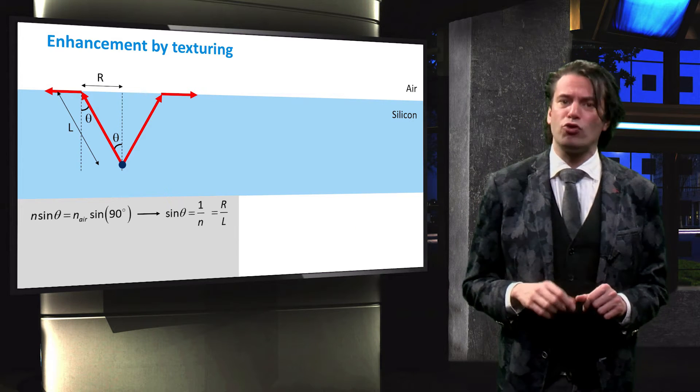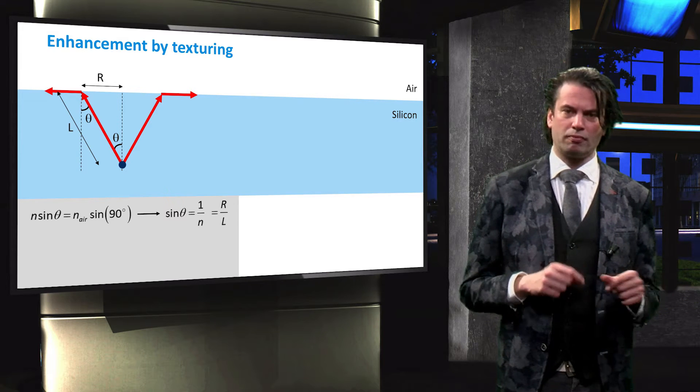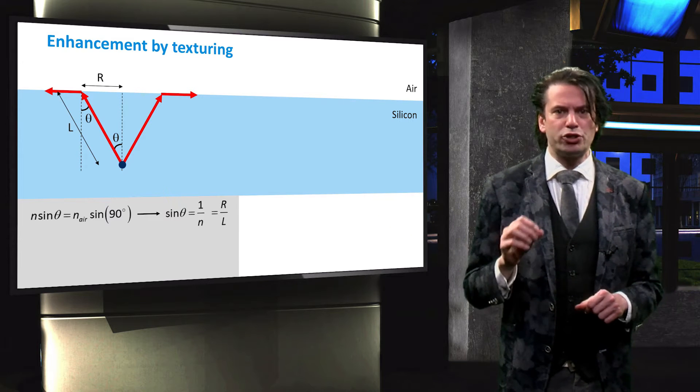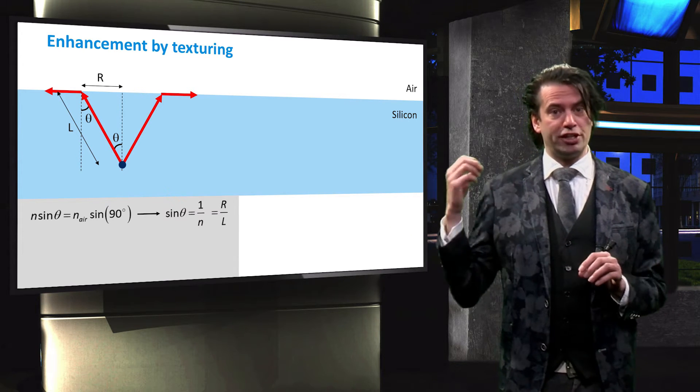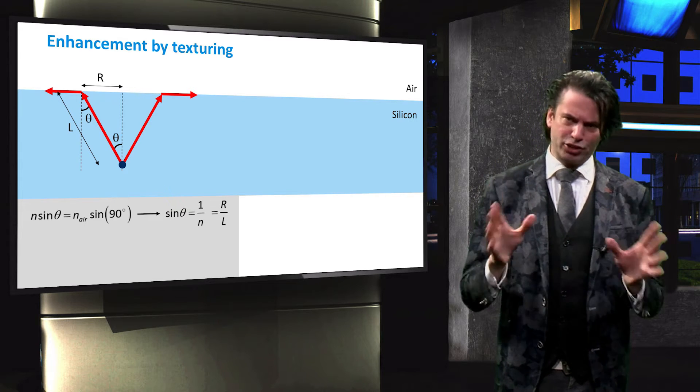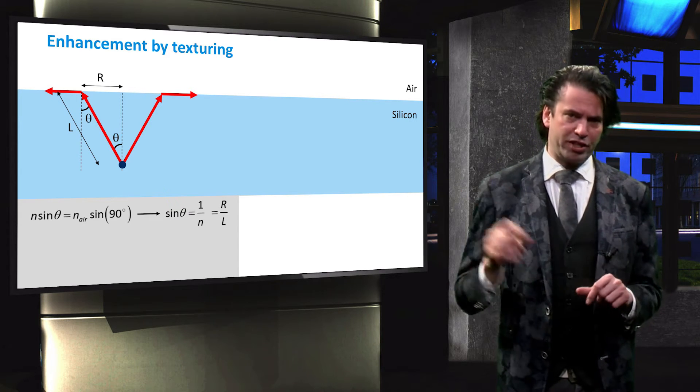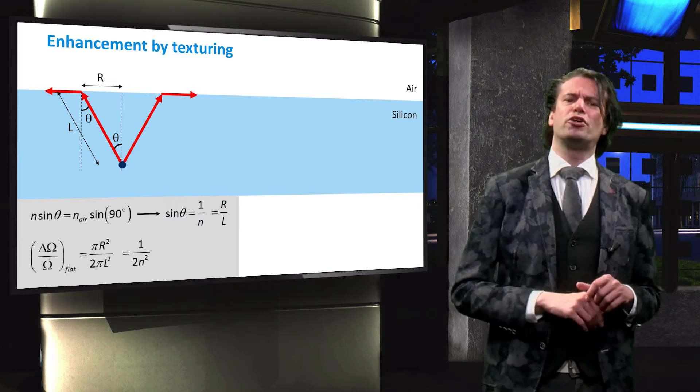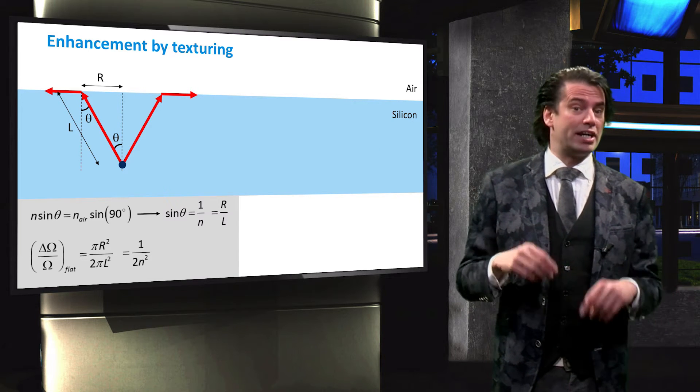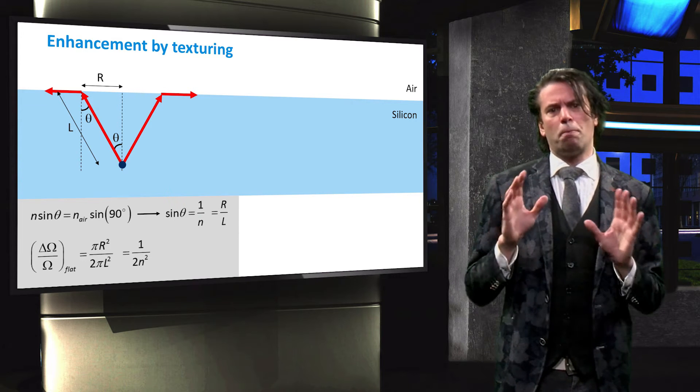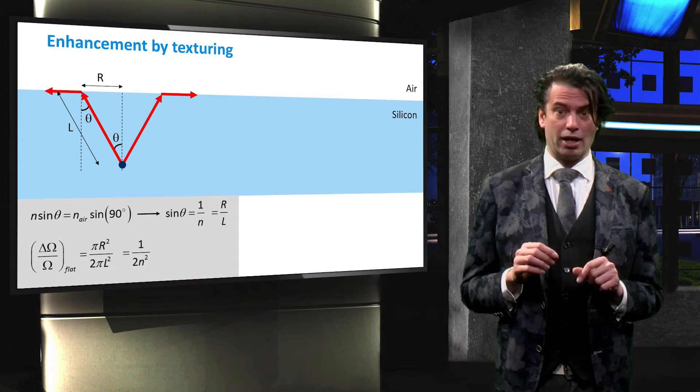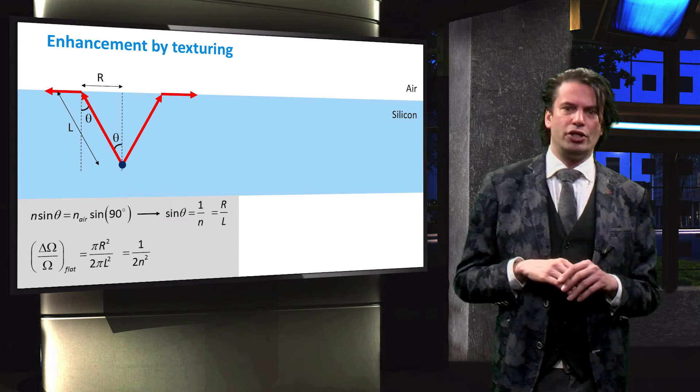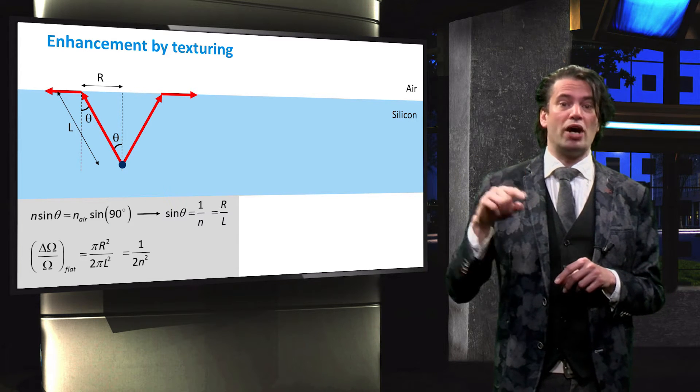We can now define the amount of light trapping in the solar cell. This is achieved by calculating the solid angle under which the light can reach a point in the bulk, called the cone of incidence. We compare this solid angle to the full hemisphere from which light can theoretically reach our point. This hemisphere is denoted by omega, while the cone of incidence is denoted by delta omega. The comparison yields the following equations. And since R over L equals 1 over N, the equation simplifies to 1 over 2N squared.